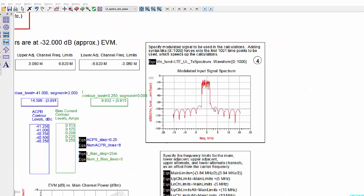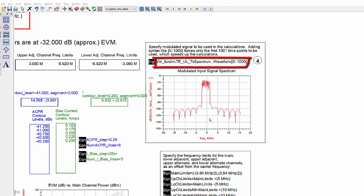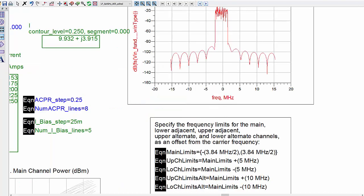We have specified that only the first 1,001 time points be used in the calculations. If you want ACPR data, you need to specify the main and adjacent channel frequency limits as an offset from the carrier frequency. These need to be set based on the bandwidth of the modulated signal.